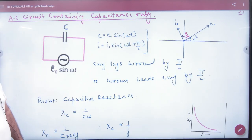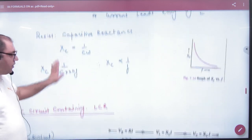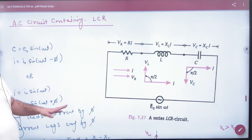by an angle of 90 degrees. What is the reactance? XC equals 1 by C omega. And in LCR, what did we do?